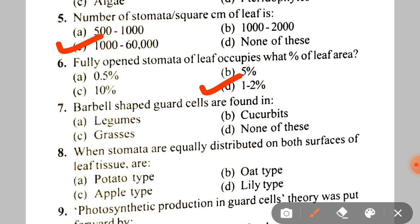Next question: barbell-shaped guard cells are found in A. Legumes, B. Cucurbits, C. Grasses, D. None. The correct answer is C — grasses.